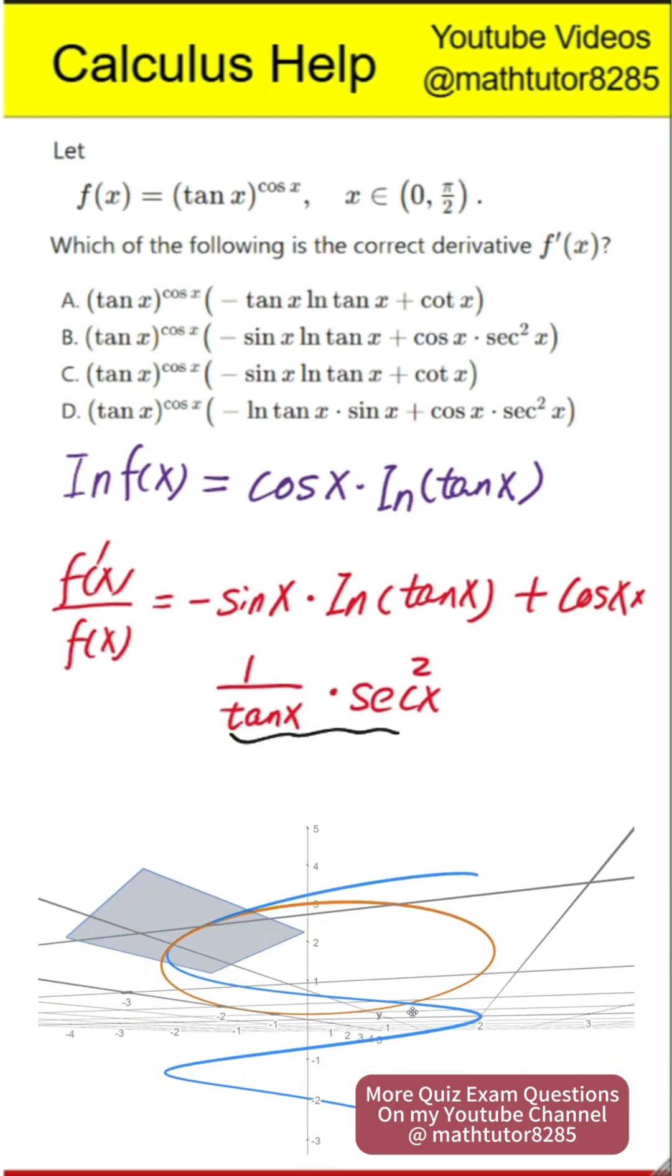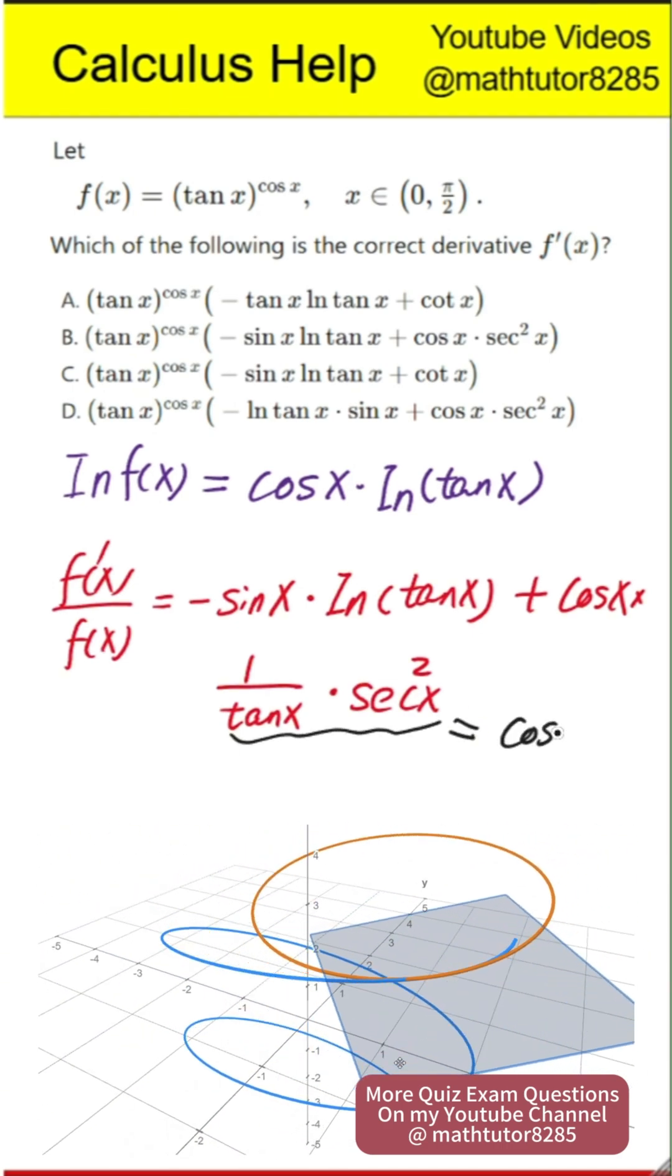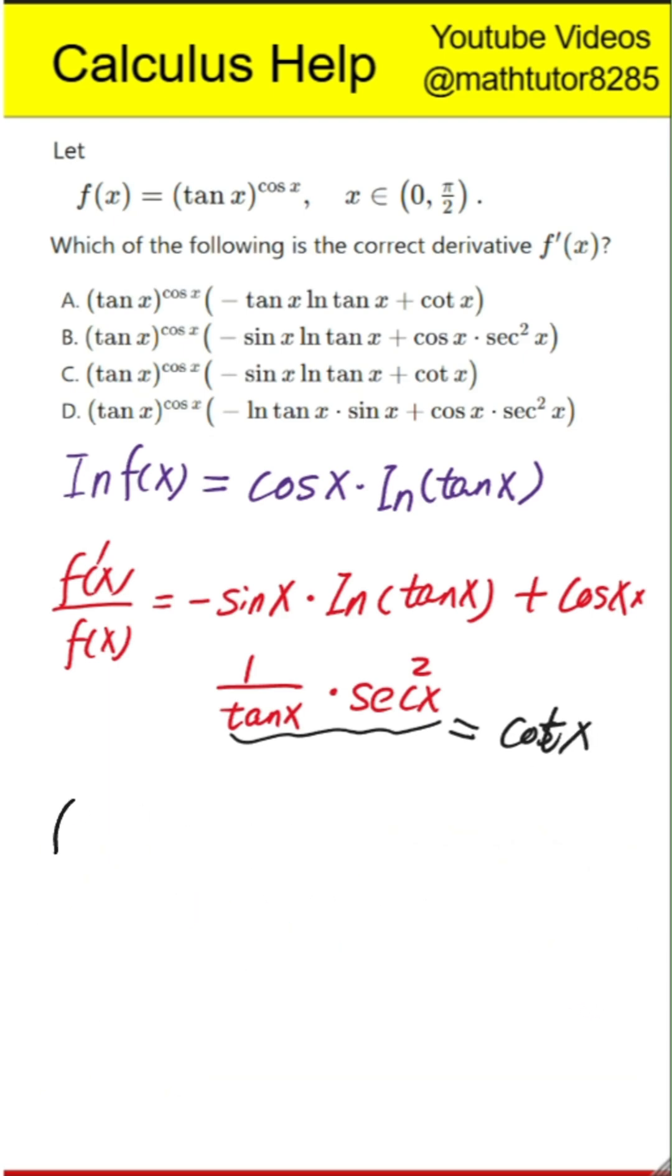Then, next step, simplify the expression. Notice that secant squared x divided by tangent x simplifies to cotangent x. So the formula becomes f prime of x over f of x equals negative sine x times natural log of tangent x plus cosine x times cotangent x.